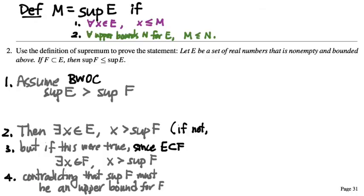Okay. Or at least an upper bound. Right, an upper bound, exactly. So if it were not the case that there existed an X in E which is greater than the supremum of F, if not, then the supremum of F would be an upper bound for E, right? And if the supremum of F is an upper bound for E, what do we know about the relationship between the supremum of F and the supremum of E?